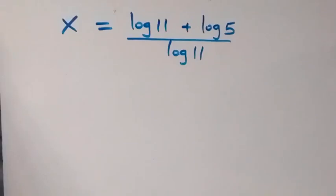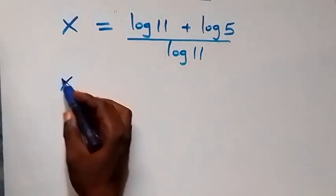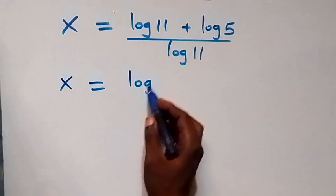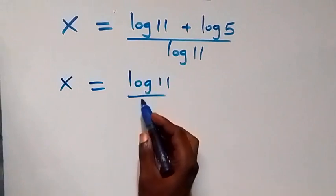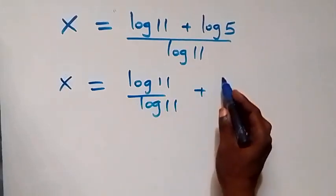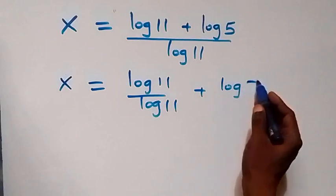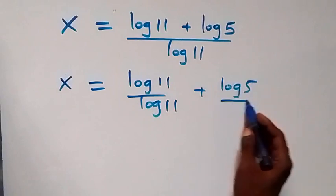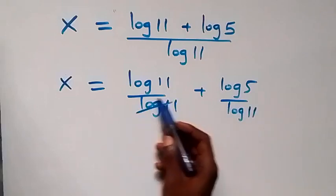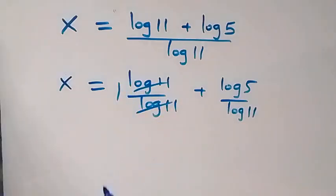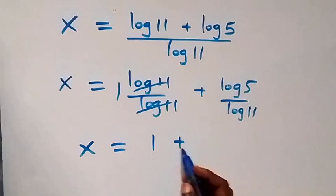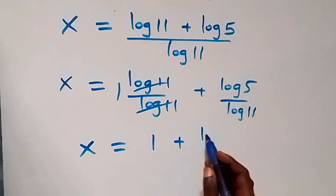We separate these fractions and we have x equals to log 11 over log 11, plus log 5 over log 11. Here these cancel each other and we have one, so x equals to one plus log 5 over log 11.